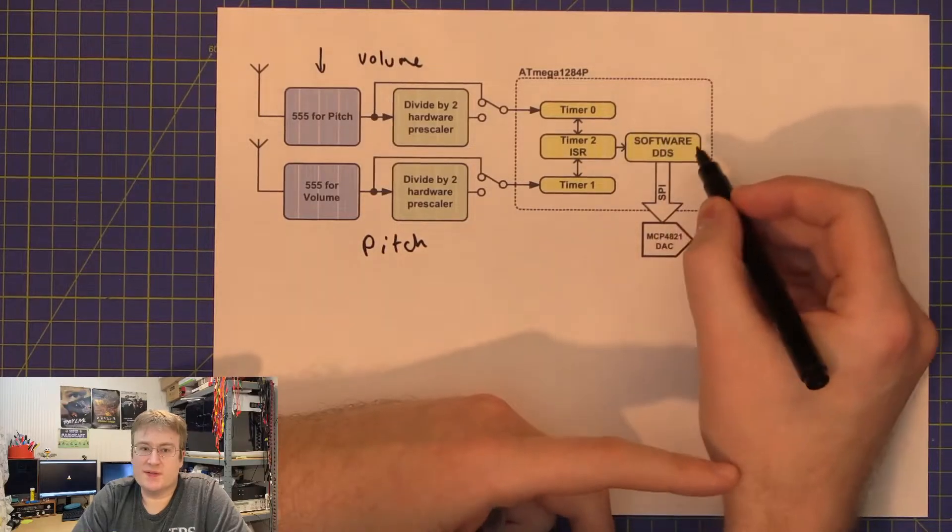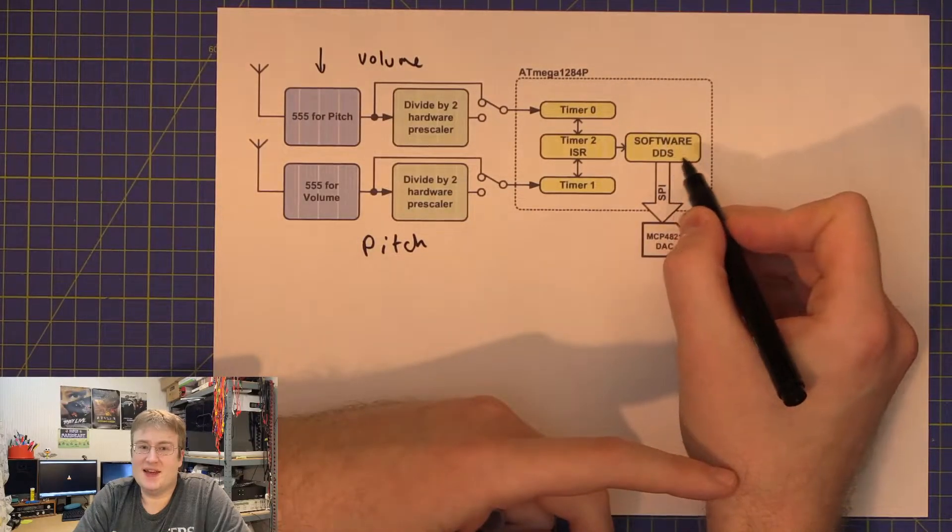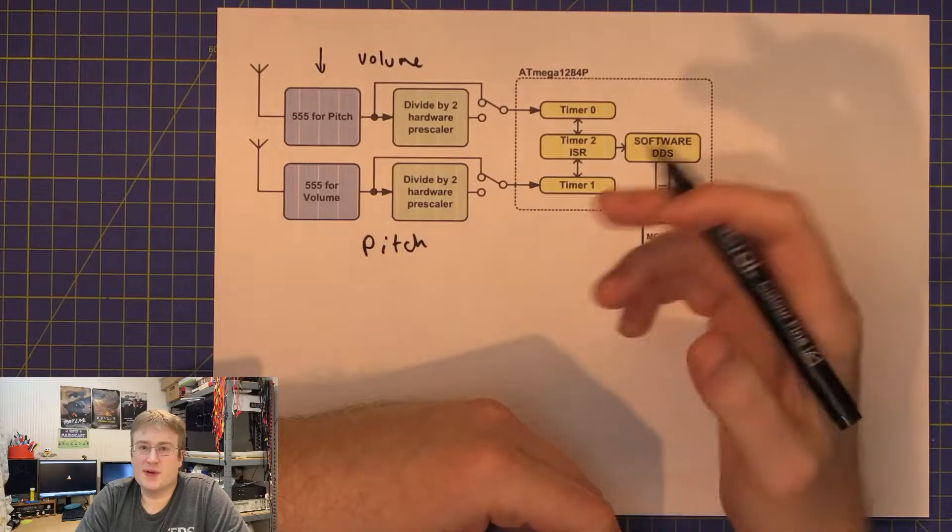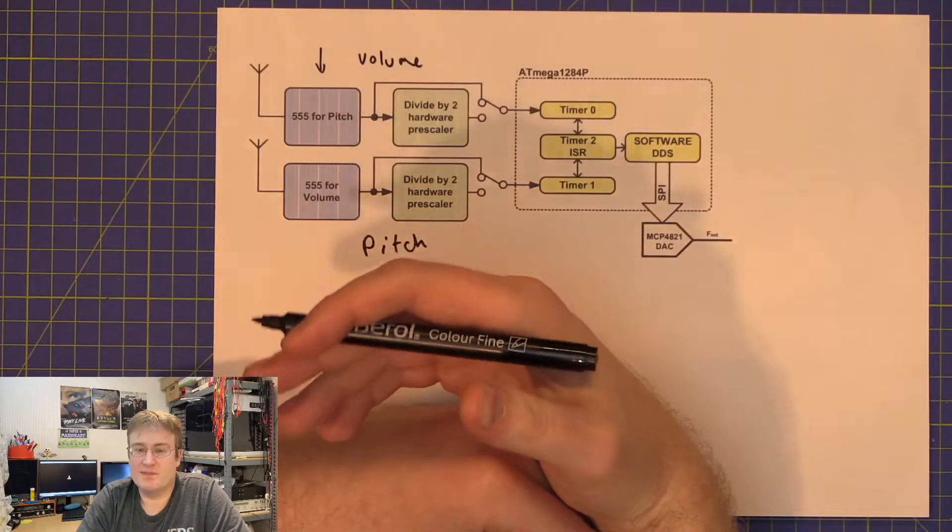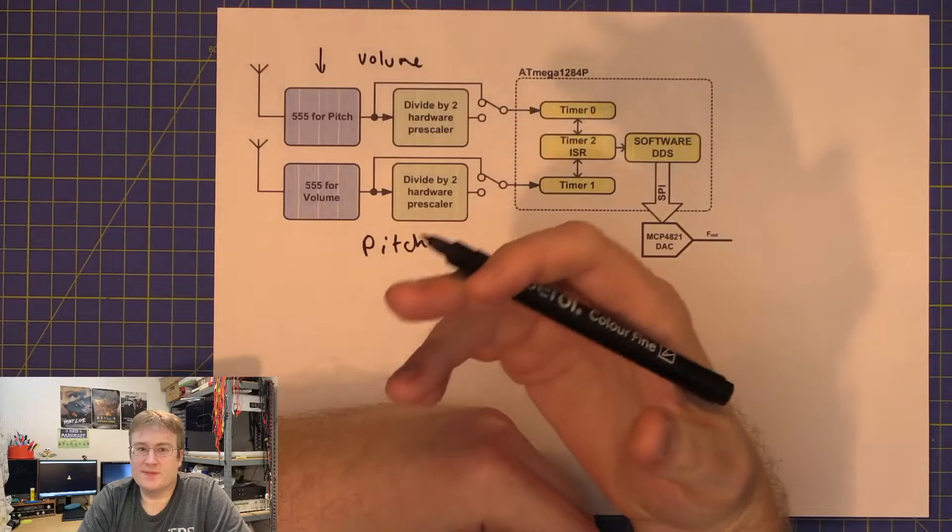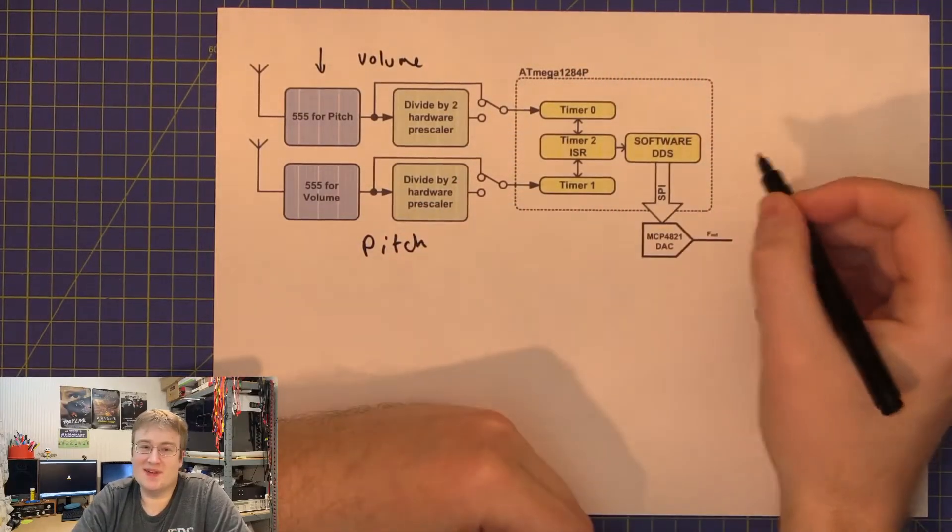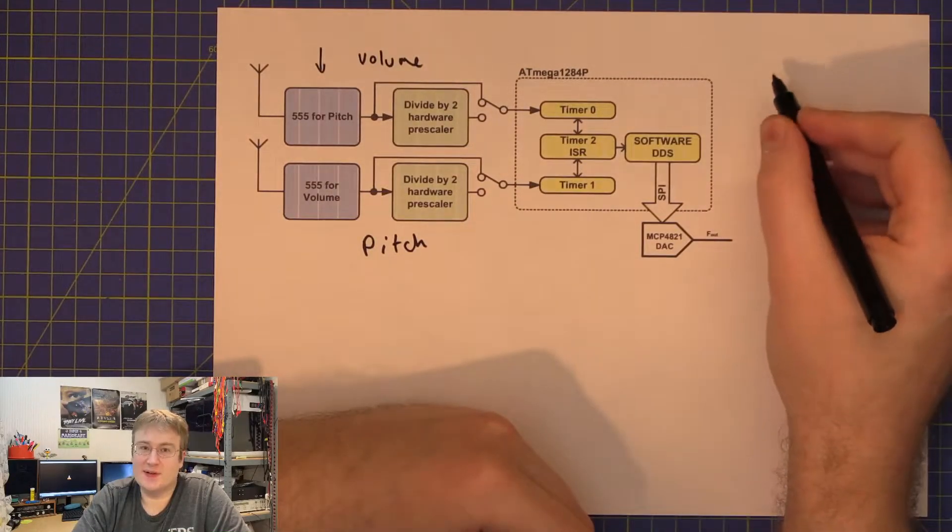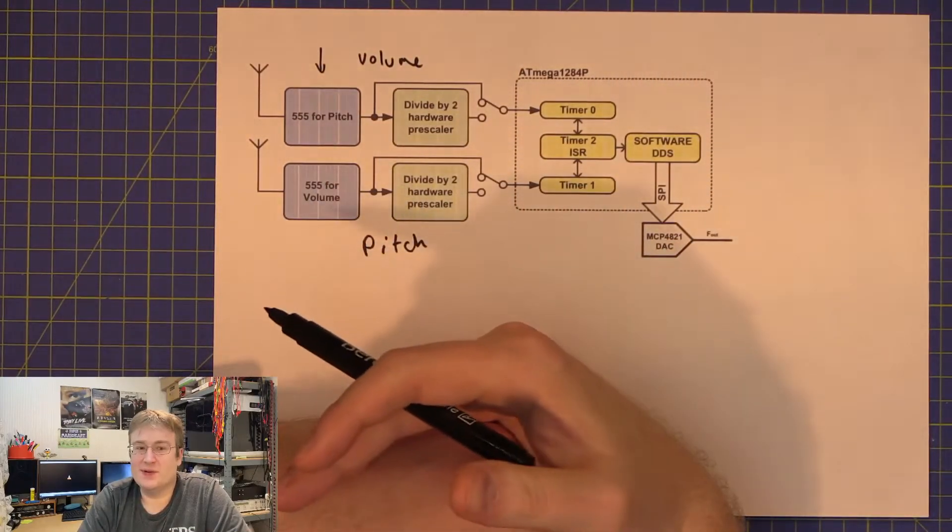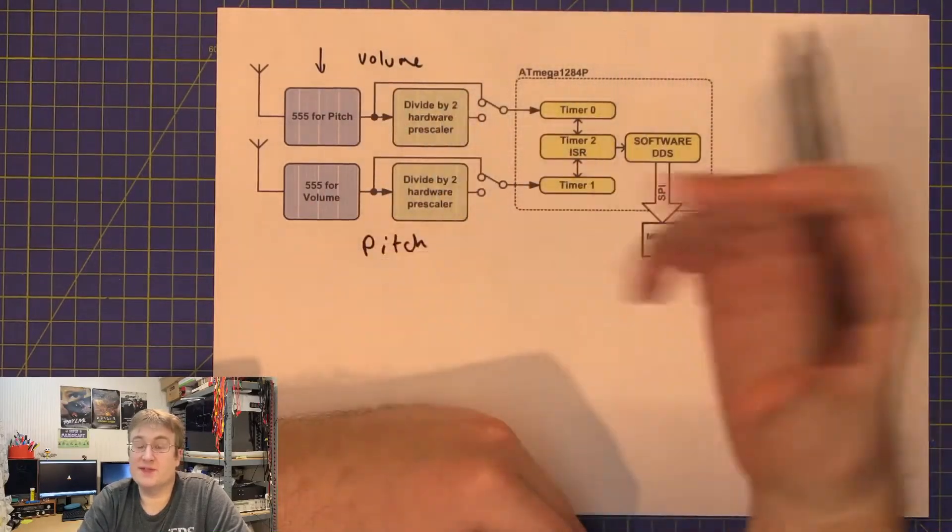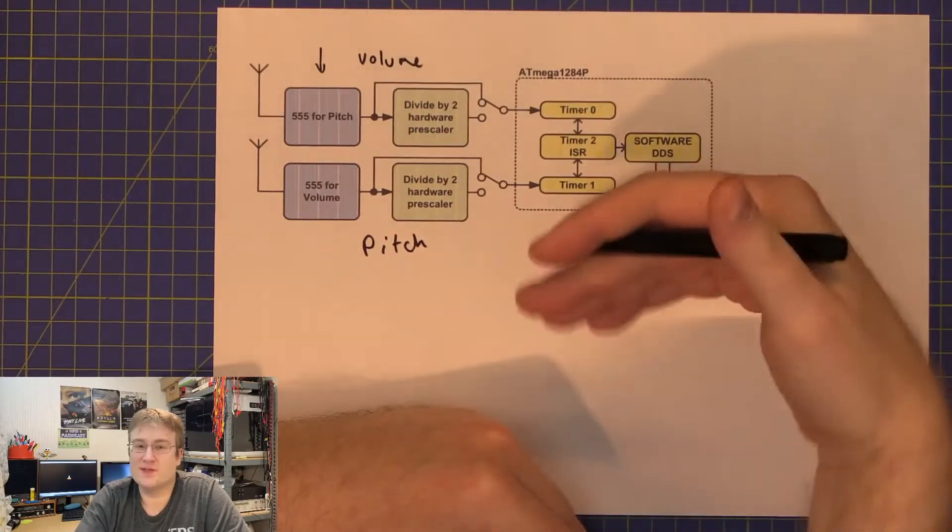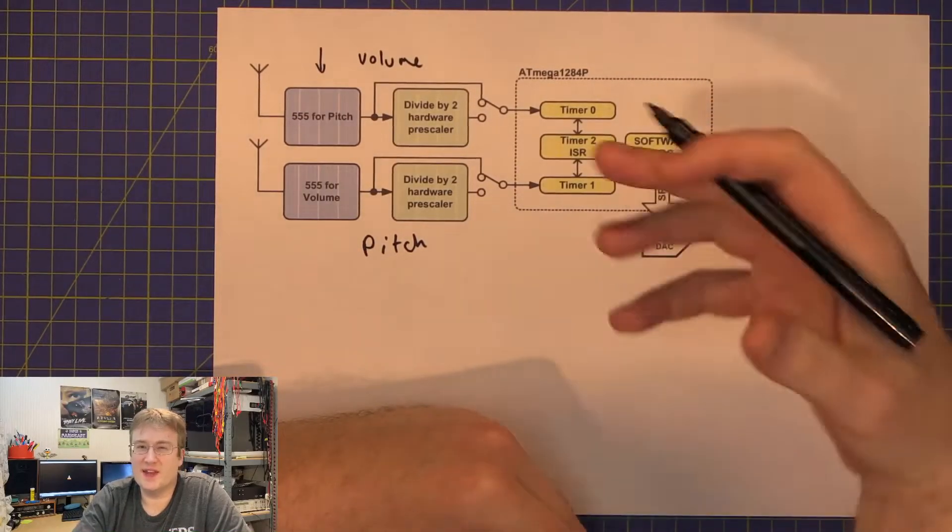This interrupt service routine also runs a software-based DDS. The DDS is a direct digital synthesizer or synthesis approach which allows you to generate basically sine waves or any waveform at any frequency. A simple way of describing a DDS is you have a lookup table of a sine wave, and by varying how fast you go through that sine wave you can essentially create sine waves of different frequencies. It's more complex than that and we actually have a lot more resolution than just how fast we go through each step. It's a lot more involved but that's the fundamental idea.